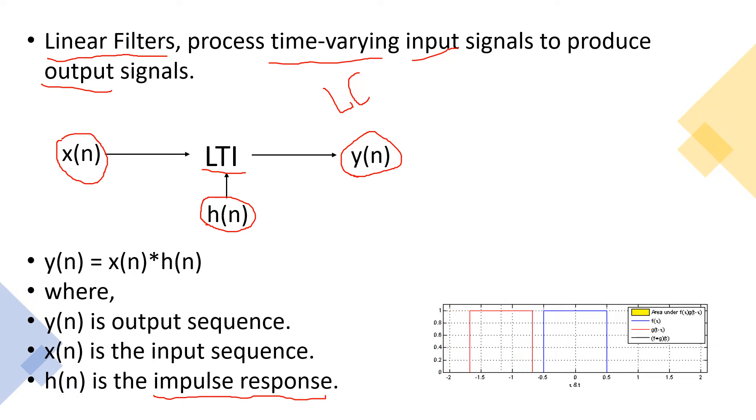Impulse response is the response of the system when the input is impulse, that is how the system behaves for an impulse input. So far we have understood that for linear filtering we need linear convolution operation.